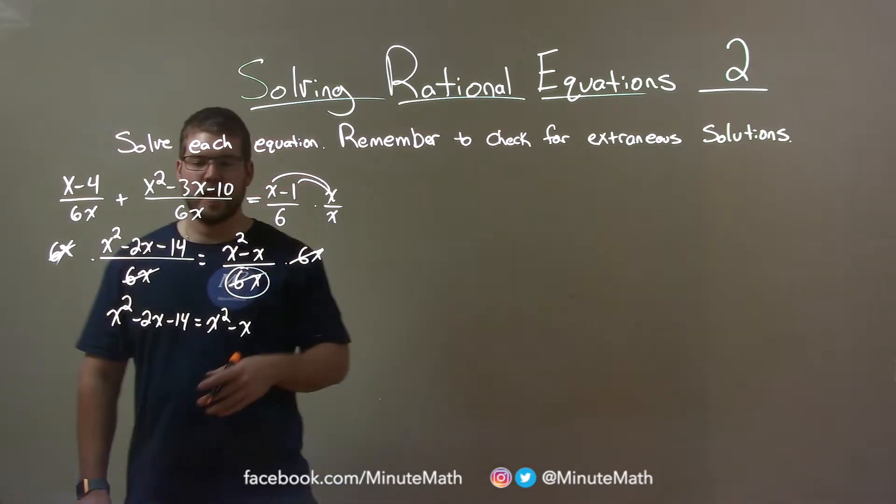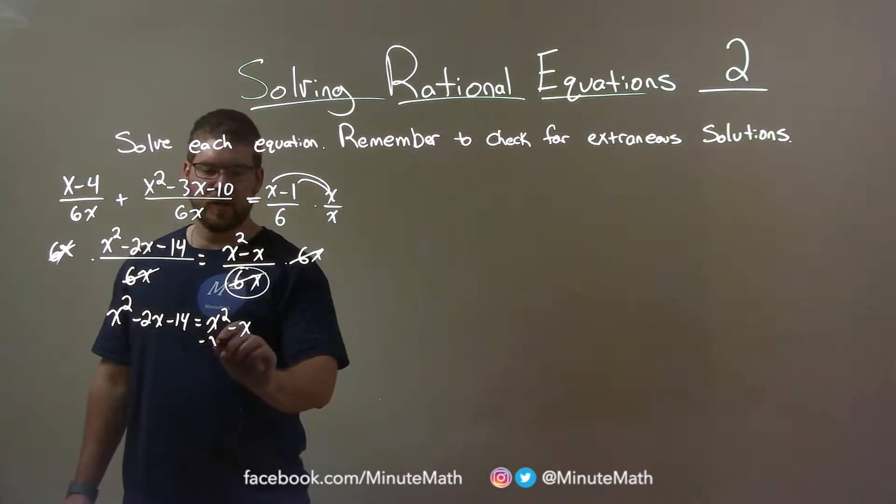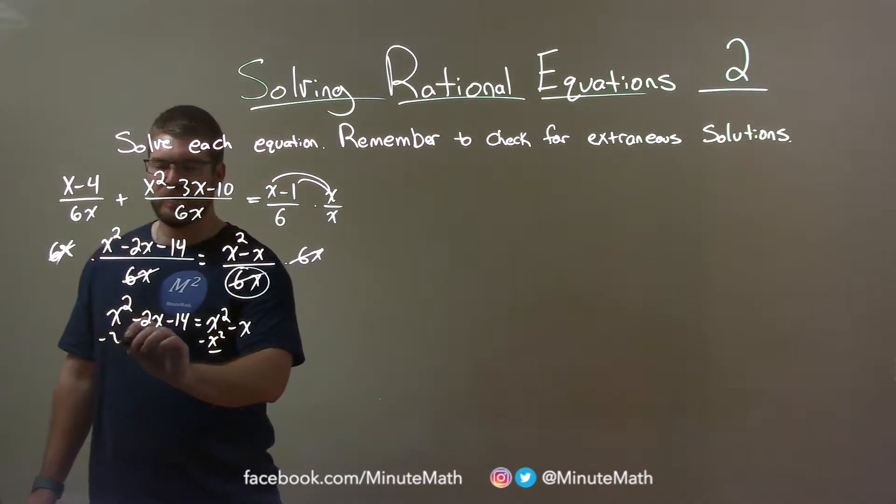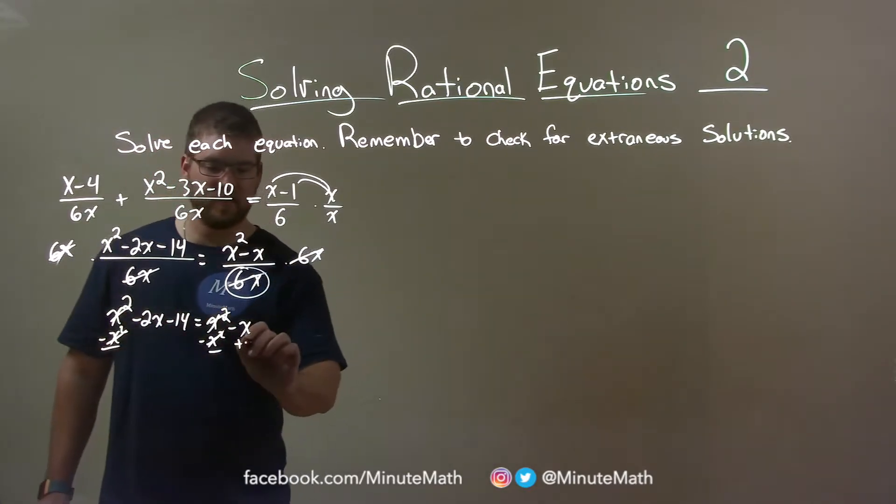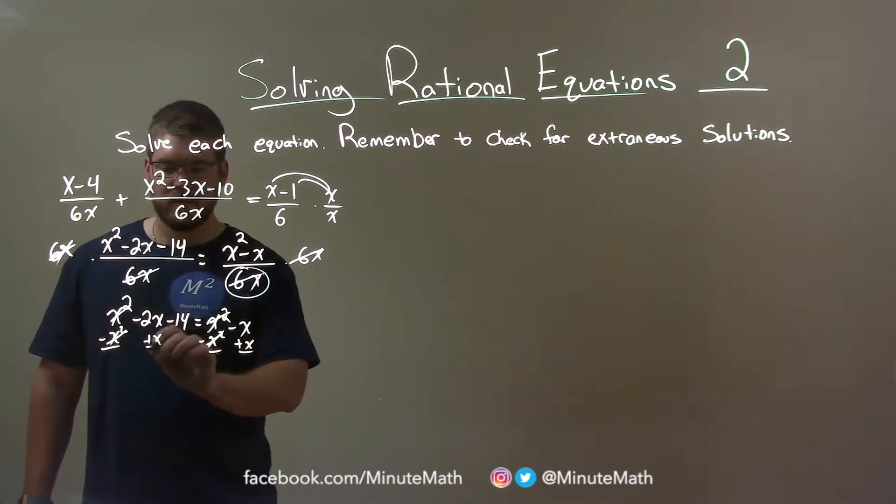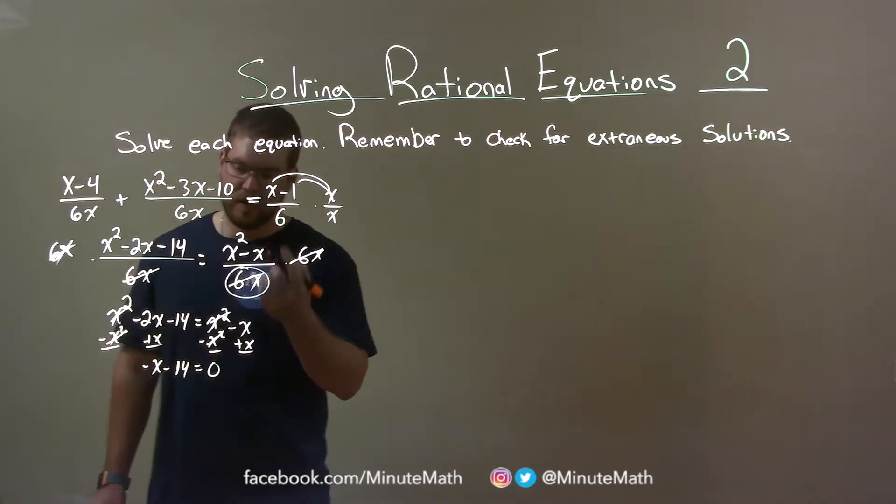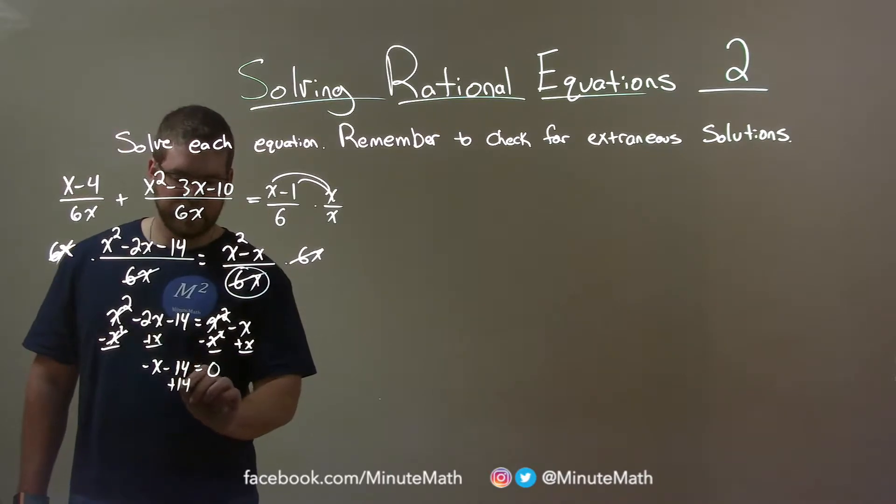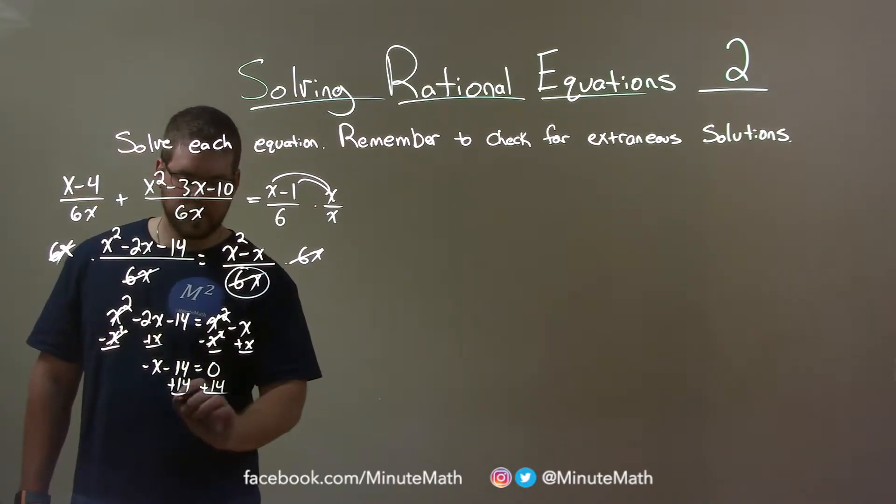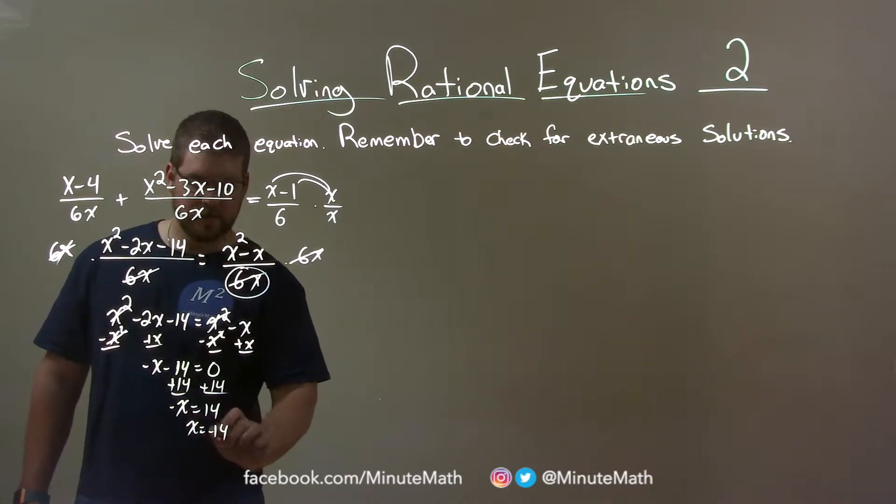Bring all of our like terms together to the left, subtract the x squared to both sides, and hopefully you can see they cancel. That actually makes it easier. We add an x to both sides and we have negative 2x plus x is a negative x minus 14 is equal to 0. Get x by itself. We add a 14 to both sides. Negative x equals 14 and so x equals a negative 14. Multiply both sides by negative 1.